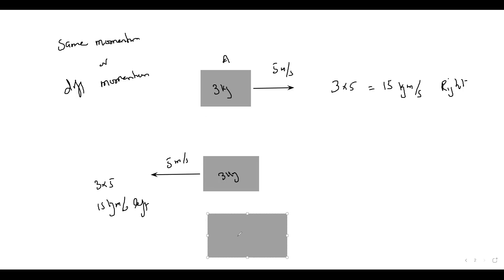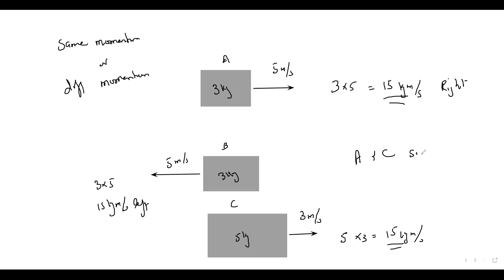Now consider a 5 kilogram object moving towards the right with a speed of 3 meters per second. Its momentum is 5 × 3 = 15 kilogram meter per second. Objects A and C have the same momentum even though their masses and speeds are different, because the product of mass and speed is the same and they are moving in the same direction. Momentum is a product of mass and velocity and depends on direction since it is a vector quantity.